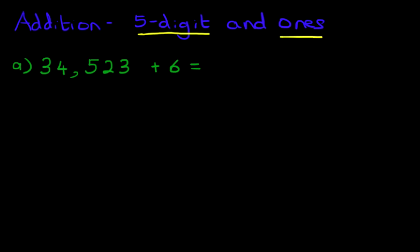So the first step is to rewrite the question in columns. Let's do that over here. 34,523, don't forget the plus sign, and 6. Now notice how the 6 goes on the right hand side. And we can also label the columns. We don't have to, but we can.